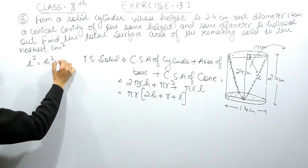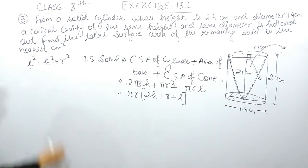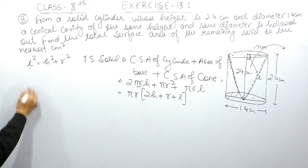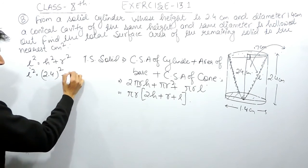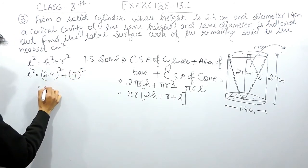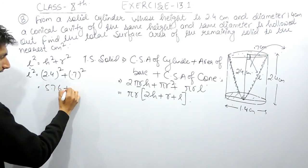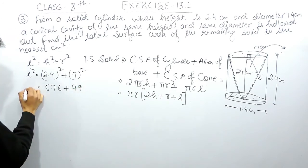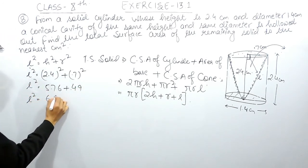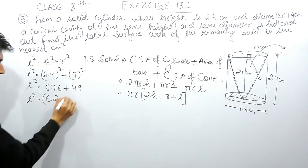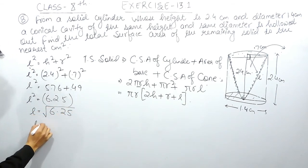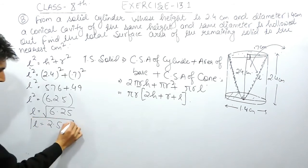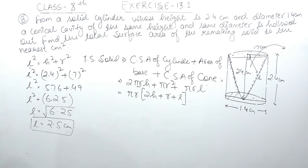So L² = h² + r² = (2.4)² + (0.7)² = 5.76 + 0.49 = 6.25. Therefore L = √6.25 = 2.5 centimeters.